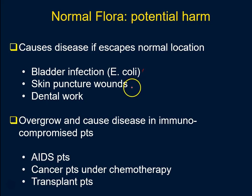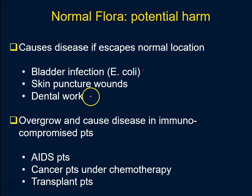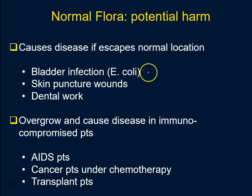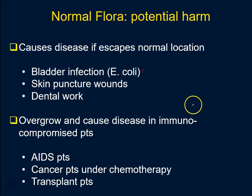Also, if somebody gets wounded, the normal flora on the skin can enter tissue and cause an infection. Another example: if you go in for a regular dental cleaning, the normal flora is within the mouth and hasn't entered the bloodstream, so it's fine. But after dental work, there's a little bleeding and it enters the bloodstream — now it has the potential to do some harm. These are situations where the same species escapes its normal location and invades another region, where it has the potential to cause disease. A non-pathogenic bacteria becomes pathogenic when it's in the wrong place.